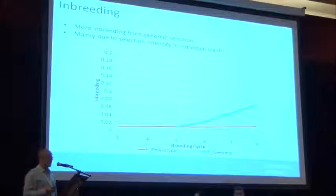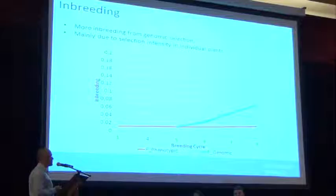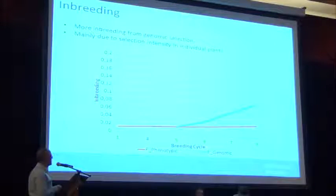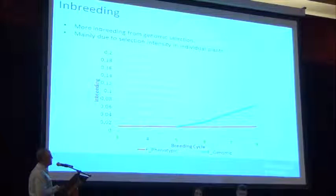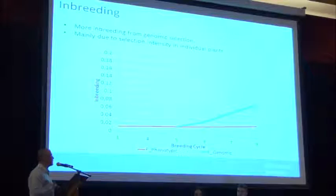There is something we need to think about though — inbreeding. We have to consider inbreeding for pasture grasses when applying genomic selection. Inbreeding from genomic selection is higher than from phenotypic selection, and we are working on methods to control inbreeding while still achieving genetic gain.